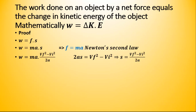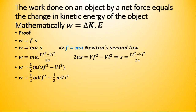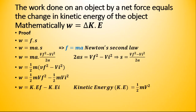The equation becomes W is equal to ma dot (vf squared minus vi squared) divided by 2a. The acceleration cancels, and the equation becomes (1/2)m times (vf squared minus vi squared). Multiplying out, this gives (1/2)m·vf squared minus (1/2)m·vi squared.